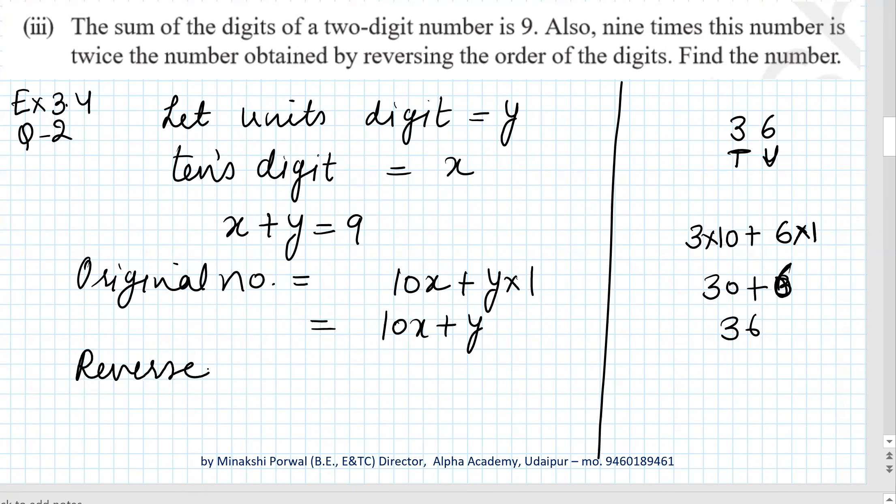Reversed number will be y multiplied by 10 and x multiplied by 1, because now x becomes units digit and y becomes tens digit. According to the question, 9 times the original number, that is 9 times 10x plus y, is twice the number obtained by reversing the digit, that is 2 times 10y plus x.